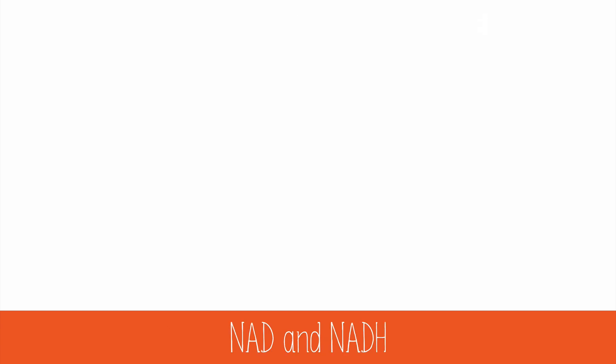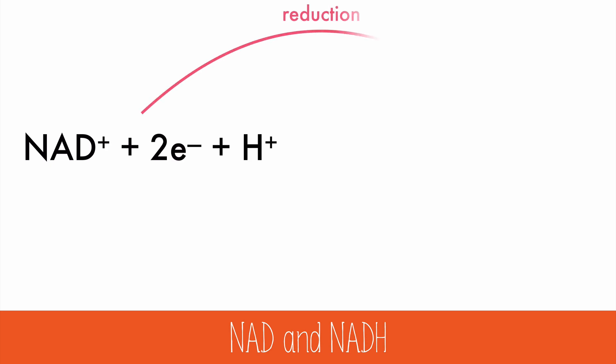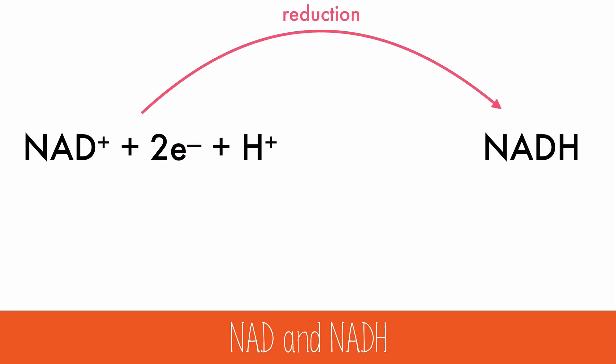Redox reactions occur frequently in certain biological molecules, like nicotinamide adenine dinucleotide, or NAD for short. NAD will be reduced by the addition of two electrons and a proton to form NADH. But the reverse reaction will also be frequently used, where NADH will release two electrons and a proton, which is the hydrogen ion, in the oxidation reaction.